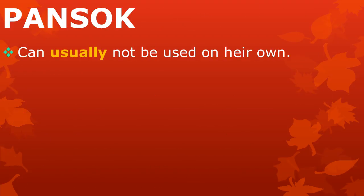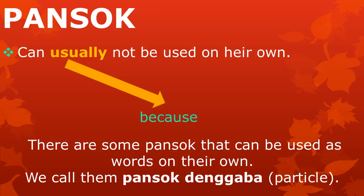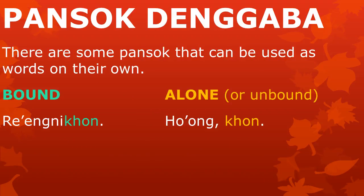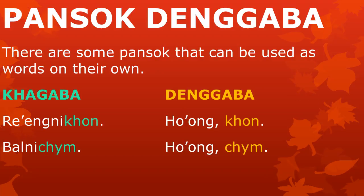We have seen that pansok — bound parts — can usually not be used on their own. However, there are some pansok that can be used as words on their own without being bound to a tzadl. We call them 'pansok dengaba', or particles in English. The meaningful part 'kon' can be used as a bound part, for example in 'ringnikon', but it can also be used all by itself when you answer 'hoong kon'. In the word 'panitem', the part 'tzem' is bound, but when you say 'hoong tzem', it is a word on its own.